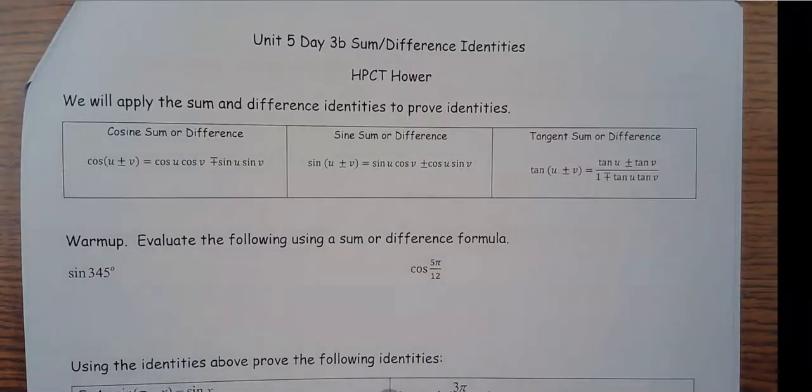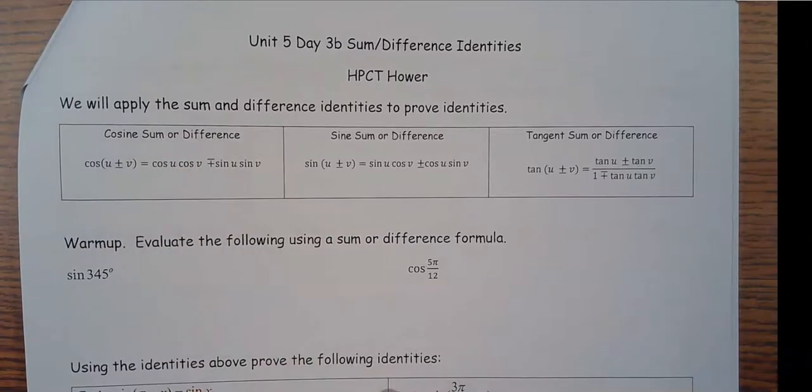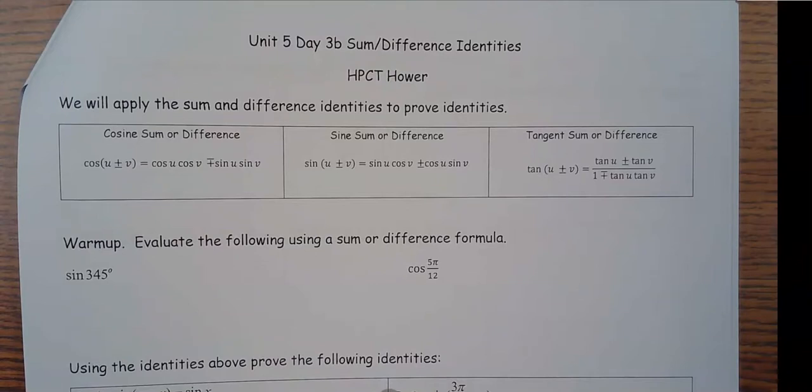Okay, day 3b. We're going to use the same sum and difference identities. We see our learning tutorial today is we will apply the sum and difference identities to prove other identities. So instead of just to find an angle or a ratio like we did in 3a, we're going to use it to solve other identities.